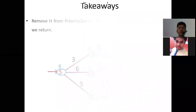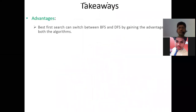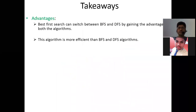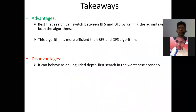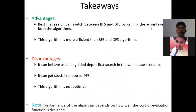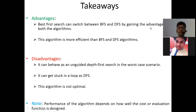The takeaways from this algorithm: Greedy best-first search is more efficient than DFS and BFS since it combines both. However, there are disadvantages — it can get stuck in loops, and the algorithm is not guaranteed to be optimal.